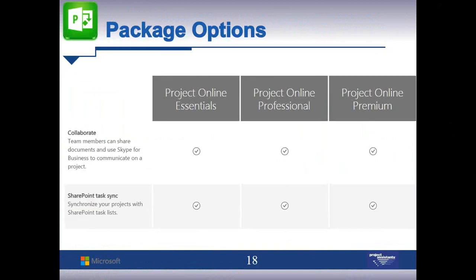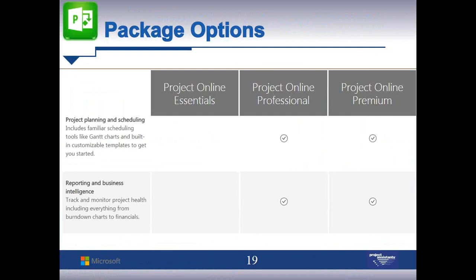Collaboration — this would primarily be SharePoint document sharing. All three packages include this capability. Even with just the simple client access license through the browser, you still have access to SharePoint capabilities, which includes synchronizing your projects with SharePoint task lists. These are really two SharePoint features — task lists, which also includes risks and issues.